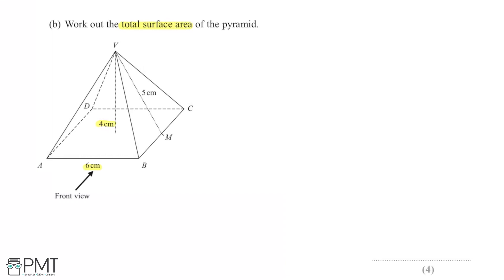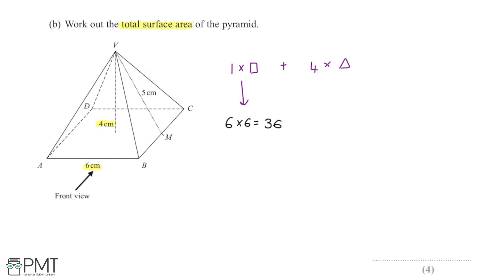Now I'm asked to work out the total surface area of the pyramid. From the diagram, this pyramid is made up of its square base — the face on the bottom — and then four identical triangular faces, which are all going to have the same area. So the surface area is effectively one lot of the square base, and then we're adding on four lots of the triangular faces. Starting with the square base: AB is 6cm, BC is also 6cm, they're all 6cm, so the area is simply 6 multiplied by 6, giving us an area of 36 for the base.